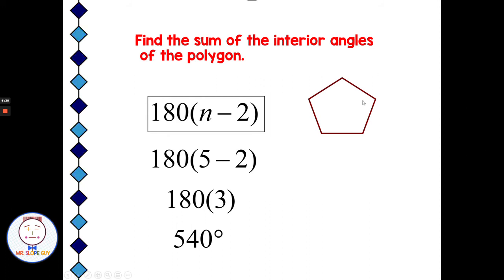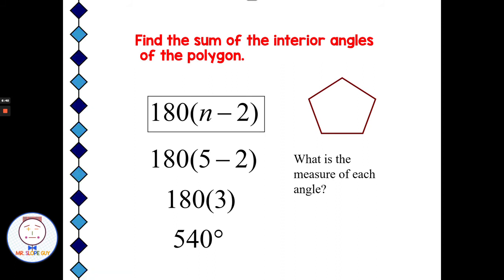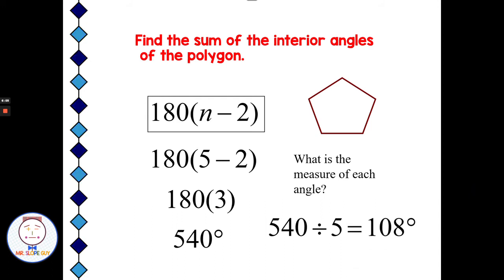This pentagon looks regular — all the sides and all the angles appear equal. Since all the sides and all the angles are equal, we can take it one step further and find the measure of each angle: take 540 divided by 5, and each angle equals 108 degrees. So every angle in this regular pentagon is 108 degrees, and together they add up to 540. That would not work with an irregular polygon — with irregular, we just stop and say the sum is 540.